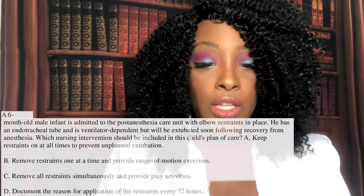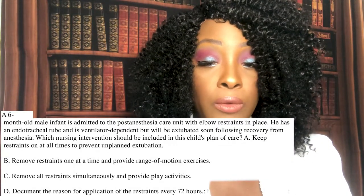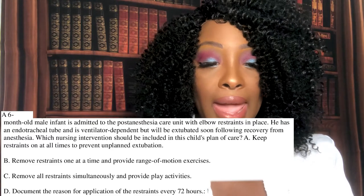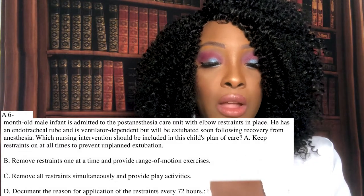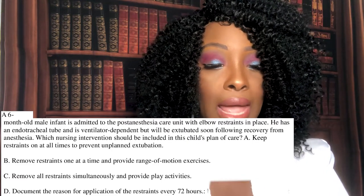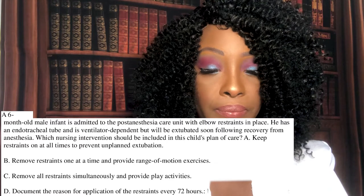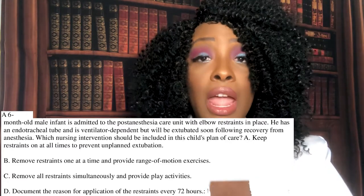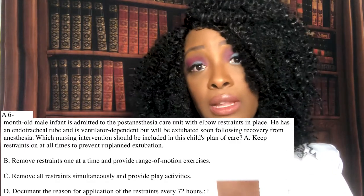Question eight: A six-month-old infant is admitted to the PACU with elbow restraints in place. He has an endotracheal tube and is ventilator dependent but will be extubated soon following recovery from anesthesia. Which nursing intervention should be included in the plan of care? A) Keep restraints on at all times to prevent unplanned extubation. B) Remove restraints one at a time and provide range of motion exercises. C) Remove all restraints simultaneously and provide play activities. Or D) Document the reason for restraints every 72 hours. The correct answer is B.